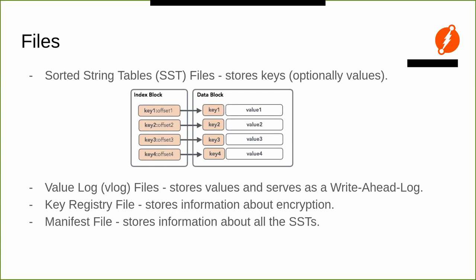The minimum read unit from the SSD is one 4 KB block — you can't read just 10 bytes; you read the whole block. Within the block, a block iterator finds the correct key. Badger is built on a paper showing that random reads from SSDs are close to reading from memory, so this design is well-suited for SSDs. If your value is stored in the value log separately, the LSM tree becomes smaller, operations on it are cheaper, and you get a performance benefit. If a key-value set doesn't fit in 4 KB, a new block is created for it.